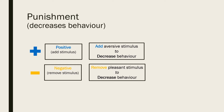However, there are many problems with using punishment. Punished behaviour is not forgotten but suppressed, so the behaviour returns when punishment is no longer present. Punishment can also create fear that can generalise to undesirable behaviours such as fear of school. Furthermore, punishment doesn't necessarily guide toward desired behaviour — reinforcement tells you what to do whereas punishment only tells you what not to do.